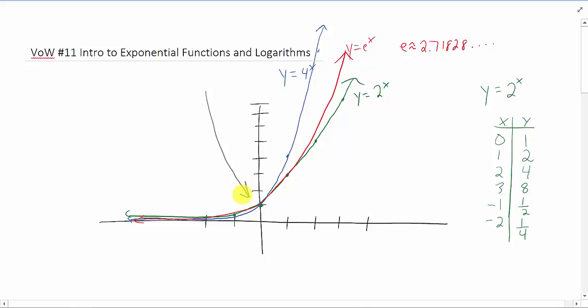It's worth noting that all basic exponential functions pass through that same point, 0, 1. Of course, in this chapter, we're going to take these exponential functions and shift them up and down and left and right. And after you do that, they'll no longer pass through 0, 1. But the basic exponential functions do.